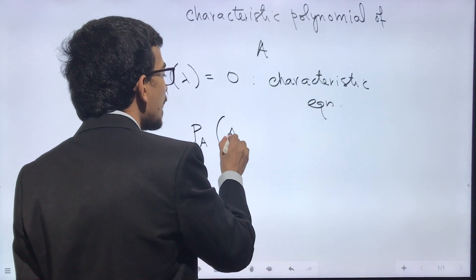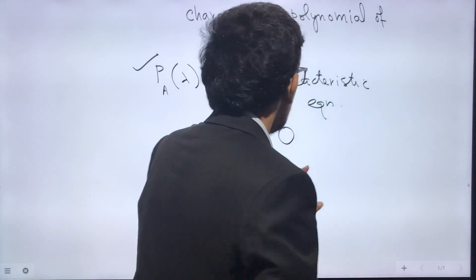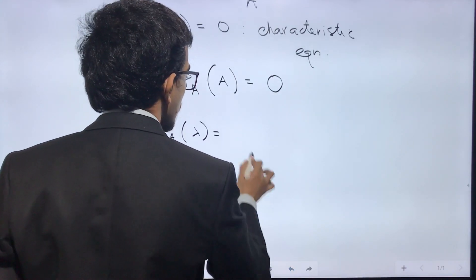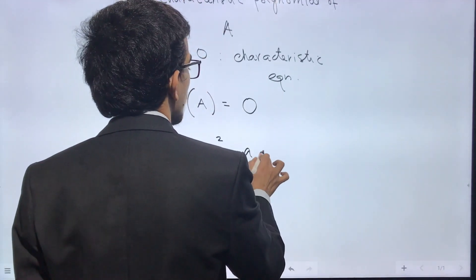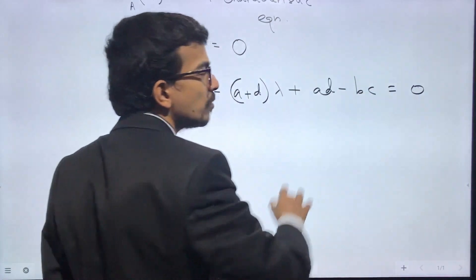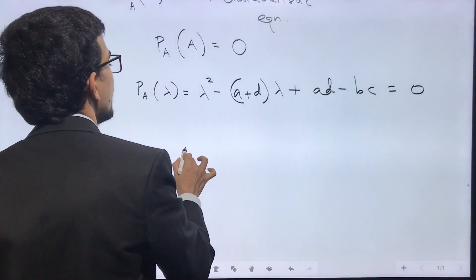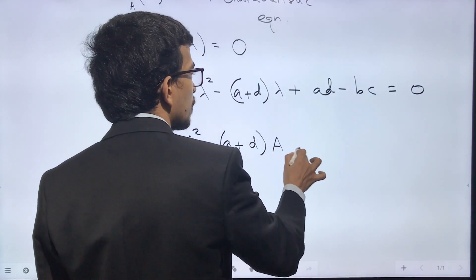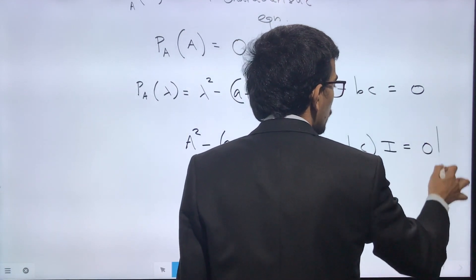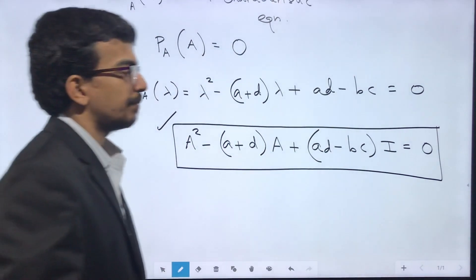So instead of the variable λ, if you substitute the matrix A itself, it satisfies the equation — giving the null matrix O on the right side. For the 2×2 case, the characteristic equation was λ² - (a+d)λ + (ad - bc) = 0, so by Cayley-Hamilton: A² - (a+d)A + (ad - bc)I = O.